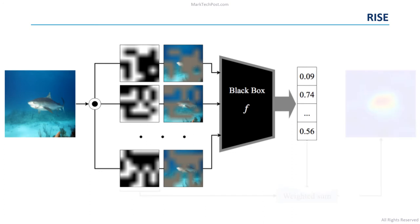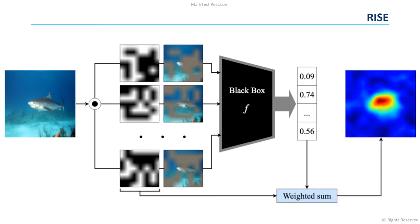Finally, the saliency map is computed as a weighted sum of the random masks, where the weights are the confidence scores of the masked images. This means that if a pixel is present in many masked images that have a high confidence score, this pixel will be considered very important for the final prediction of the network.